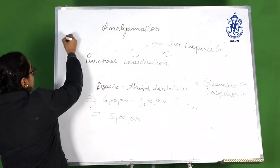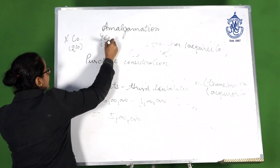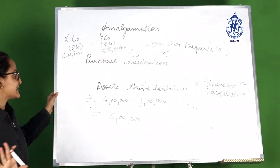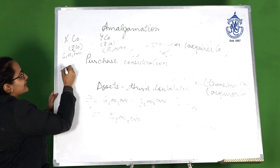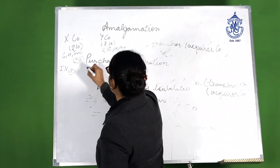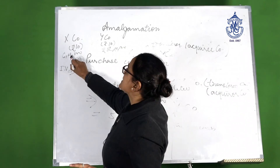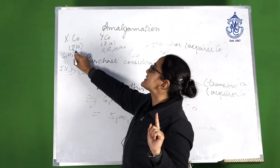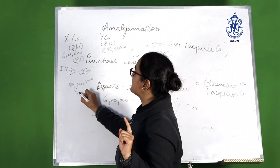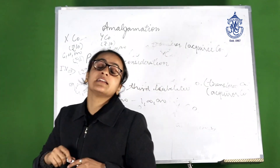Taking an example: X company has share capital of 6 lakh and Y company has 2 lakh, both divided into equity shares of rupees 10 each. The intrinsic value for X is rupees 15 and for Y is rupees 20. For X company: 6 lakh divided by 10 equals 60,000 shares; 60,000 multiplied by 15 equals 9 lakh. For Y company: 2 lakh divided by 10 equals 20,000 shares; 20,000 multiplied by 20 equals 4 lakh. Total purchase consideration payable to X and Y company is 9 lakh plus 4 lakh, which is 13 lakh. Thank you so much.